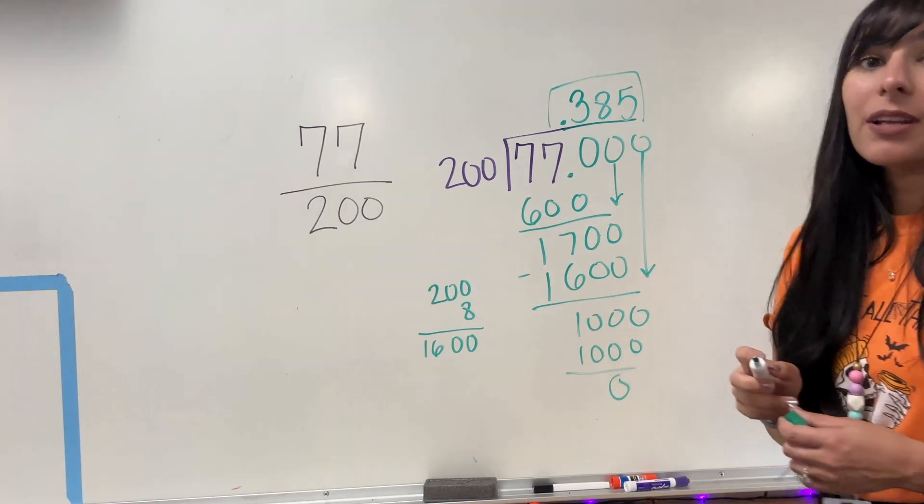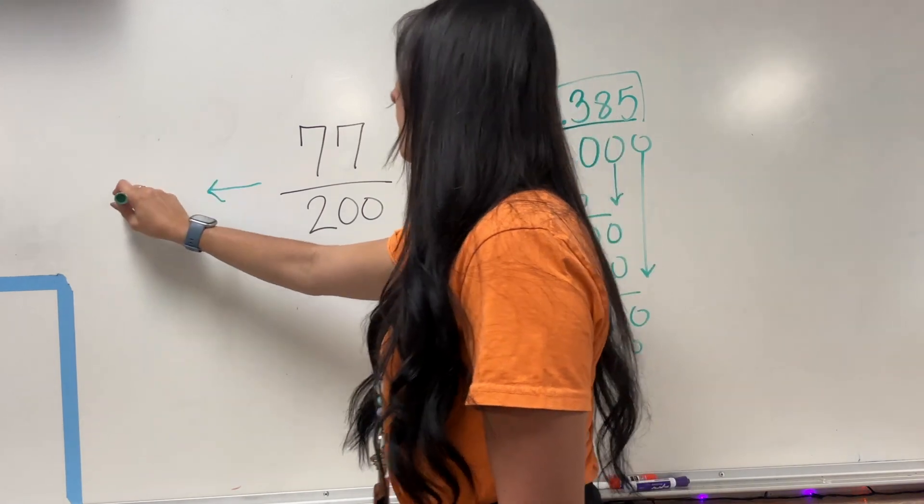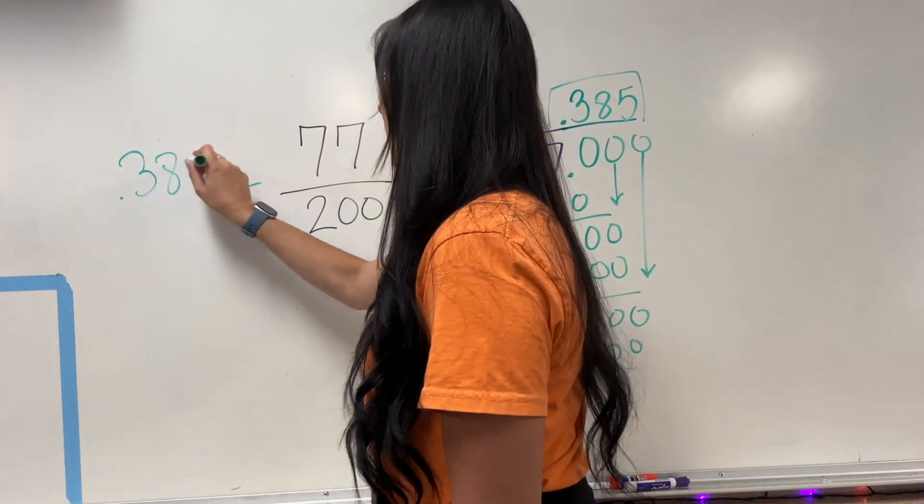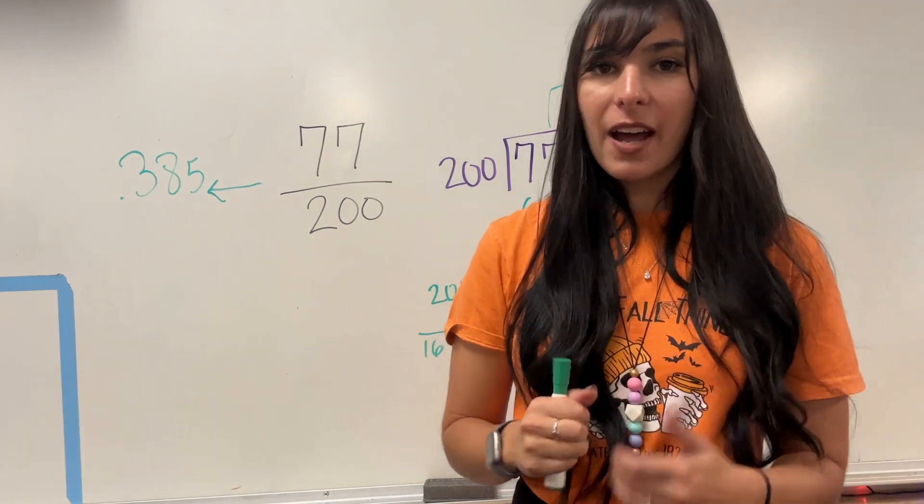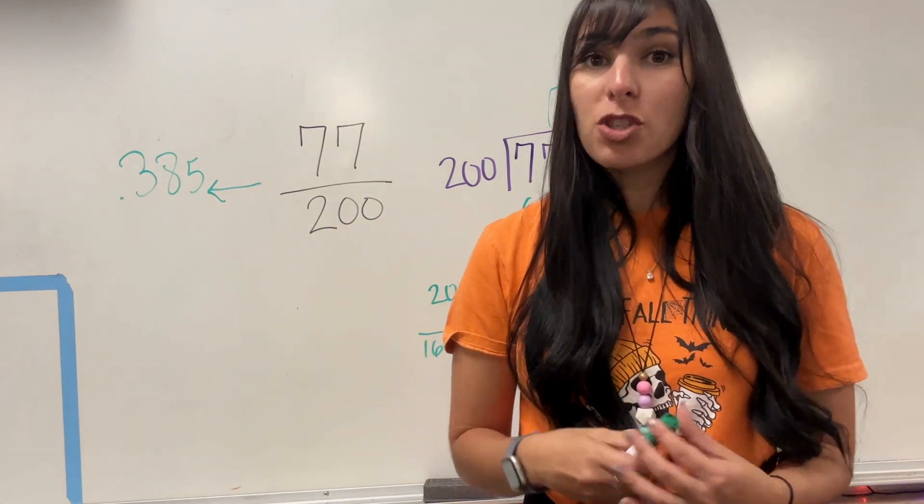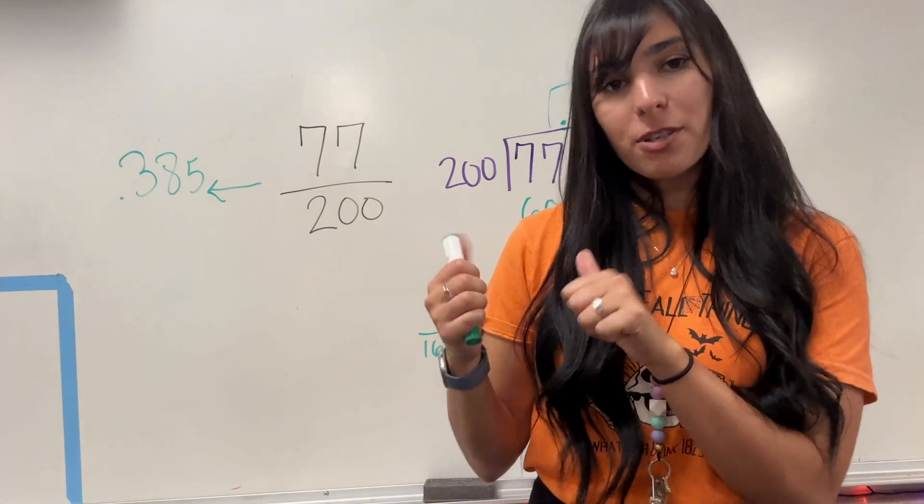So our answer is 0.385. When we convert this to a decimal, 0.385. When in doubt, you're just going to divide that numerator by the denominator. In some cases, you are going to have where that numerator is bigger. That's going to make a mixed number. Let me show you what that looks like.